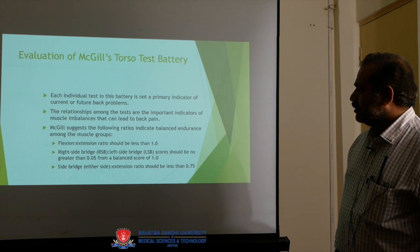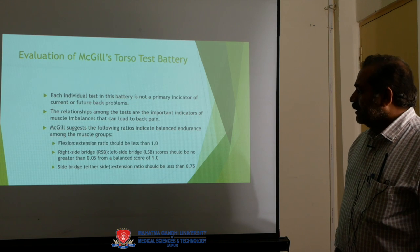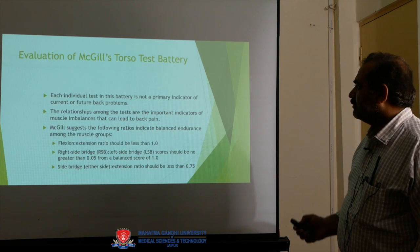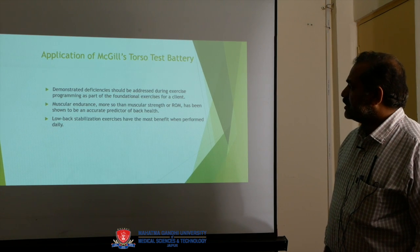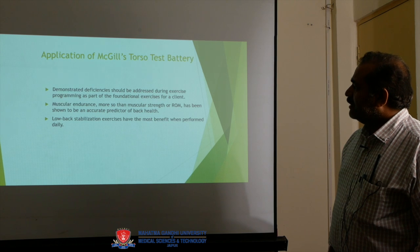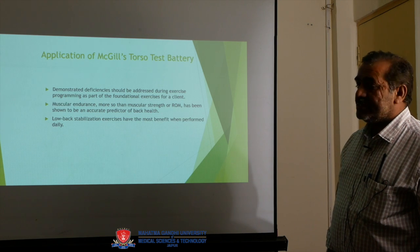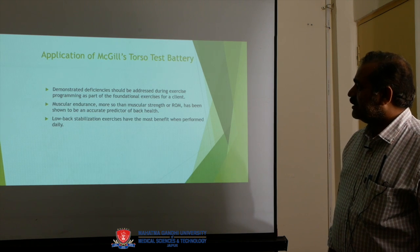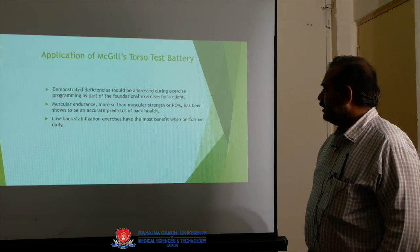A timed threshold indicates balance of endurance among the muscle groups. The flexor-extension ratio should be less than one. The right side bridge to left side bridge score should not differ by more than 0.05 from a balanced score of one. The side bridge-to-extension ratio should be less than 0.75. Demonstrated deficiencies should be addressed during the exercise program as part of fundamental exercises for the client. Muscular endurance — more so than muscular strength or ROM — has been shown to be an accurate predictor of back health. Low back stabilization exercises have the most benefit when performed daily.